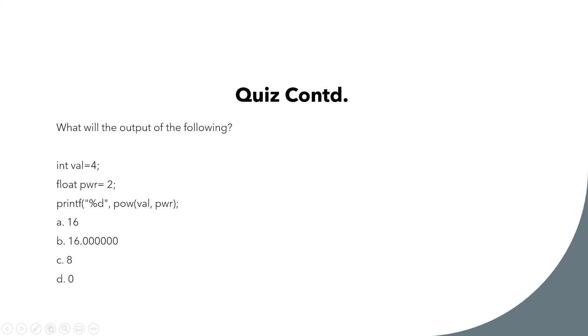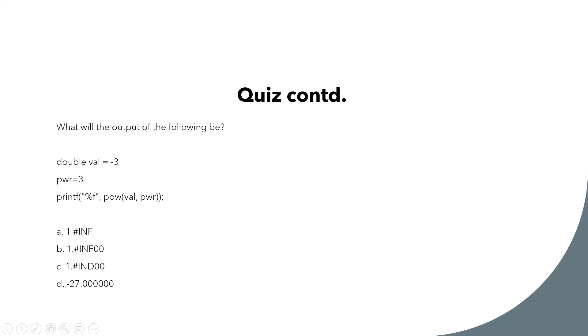What about this one? Int val equal to 4, float power equal to 2, then printing with %d, pow with those arguments. It will print 0, because we're specifying %d instead of %f. Next: double val equal to negative 3, passed to pow with exponent 3. That will print negative 27.